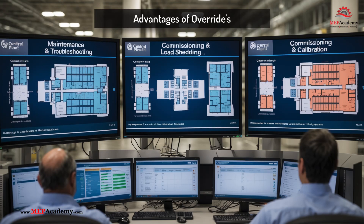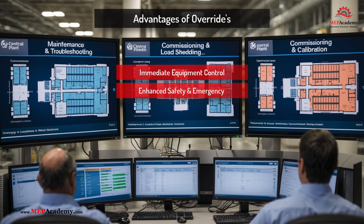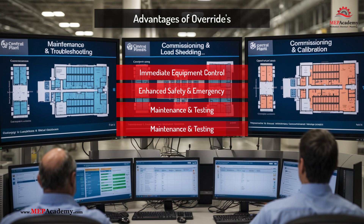Advantages of overrides: When used properly, overrides provide several benefits. Immediate equipment control allows technicians to manually operate systems when automation is malfunctioning. Enhanced safety and emergency response ensures life safety systems function when needed. Facilitates maintenance and testing by helping technicians isolate and troubleshoot faulty components. Provides flexibility for special conditions — adjustments can be made for specific events or unique situations. Energy cost reduction helps implement demand response strategies to reduce peak energy consumption.